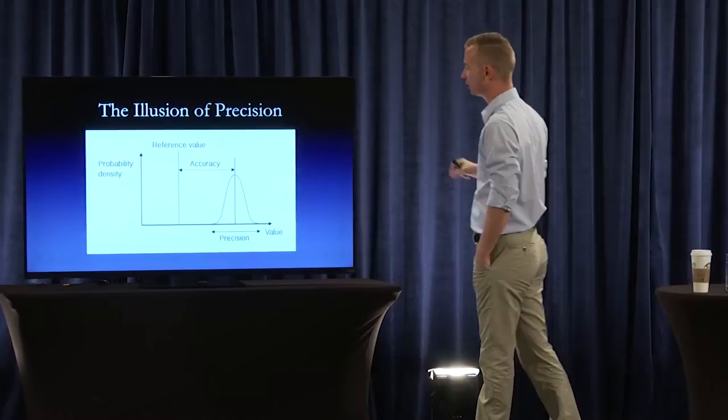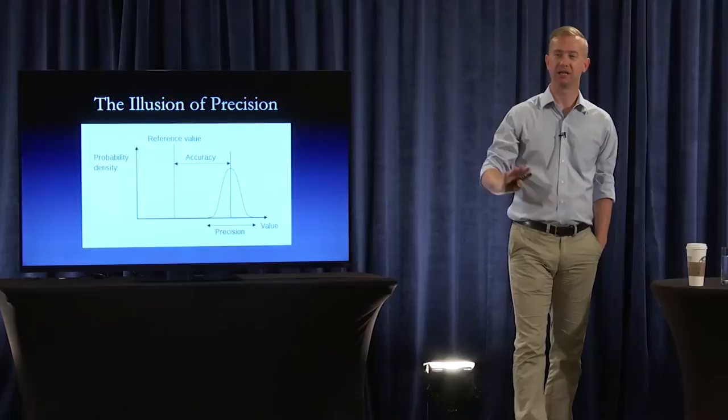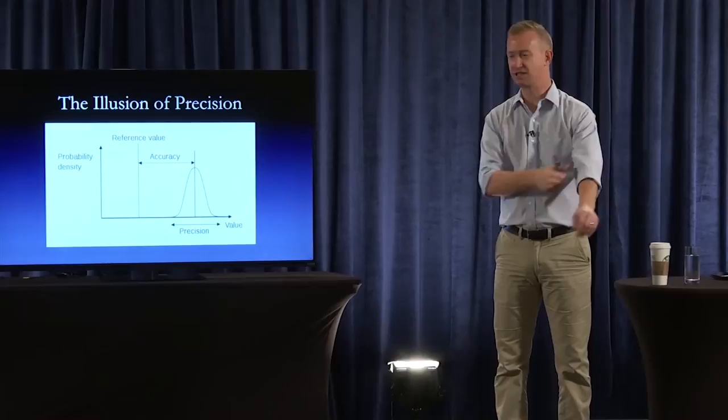I pulled this off Wikipedia — it's a pretty good illustration of accuracy and precision. Accuracy simply means: are you actually getting the correct value? If there were some perfect, disembodied way of knowing in a perfect world.